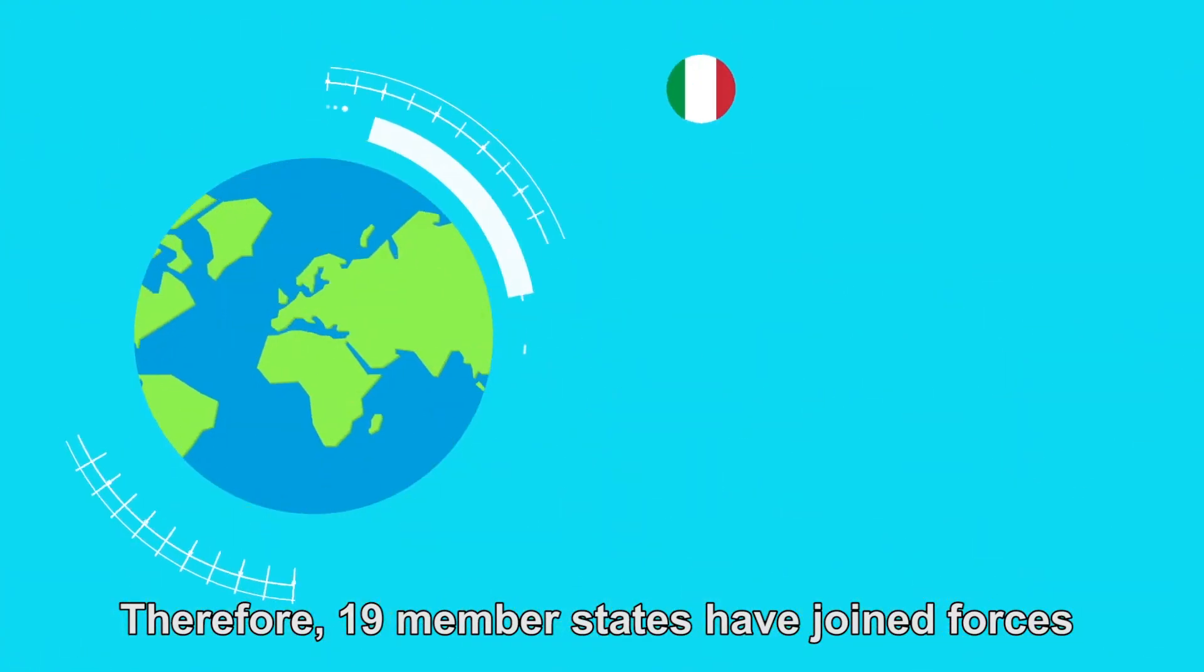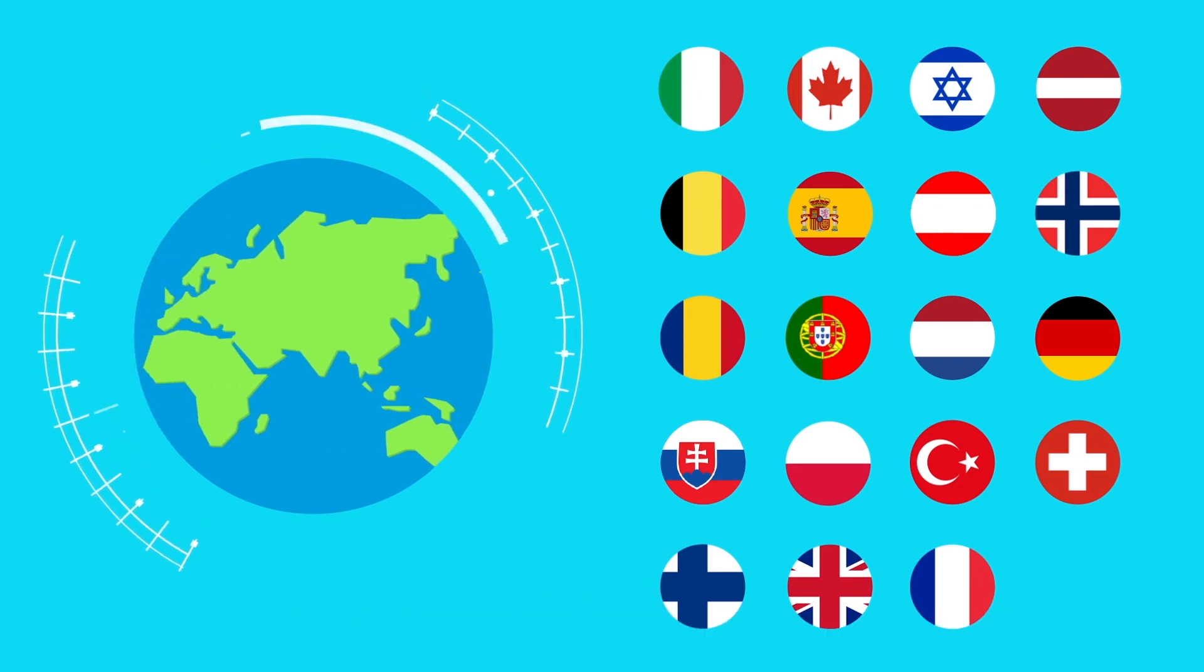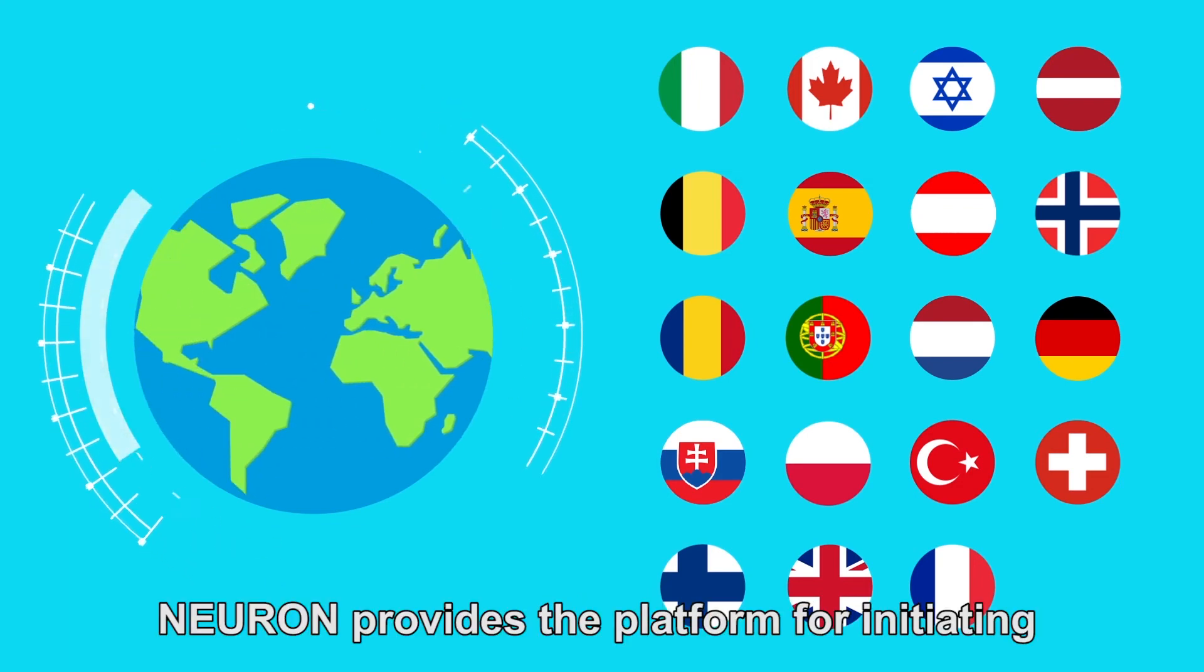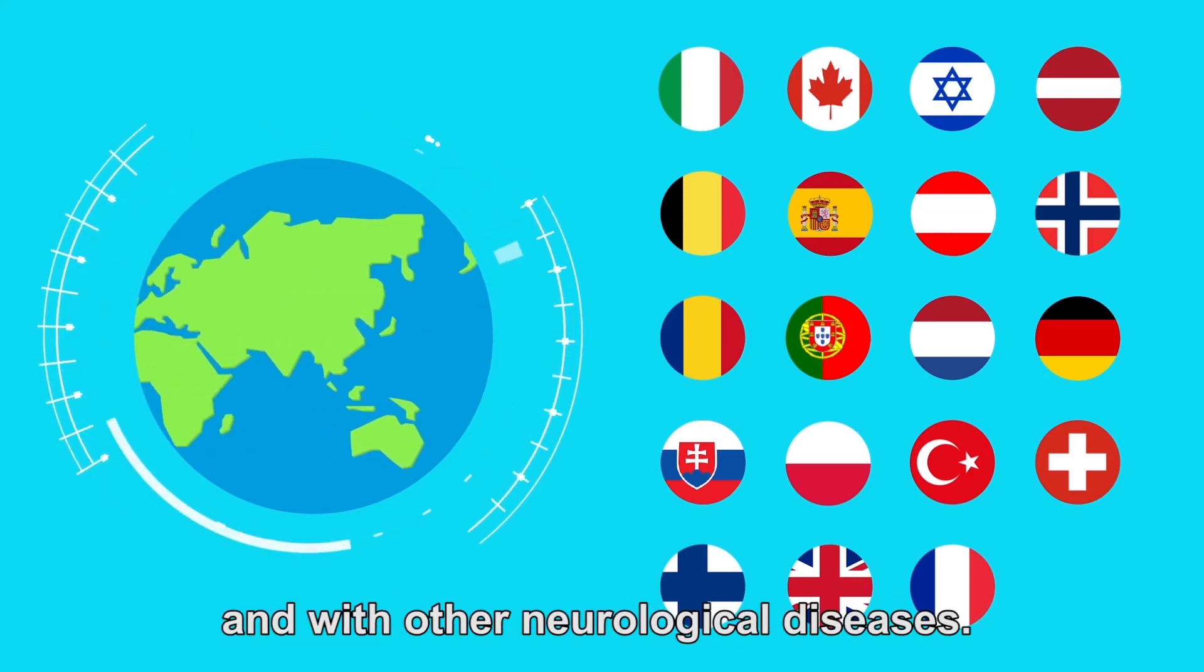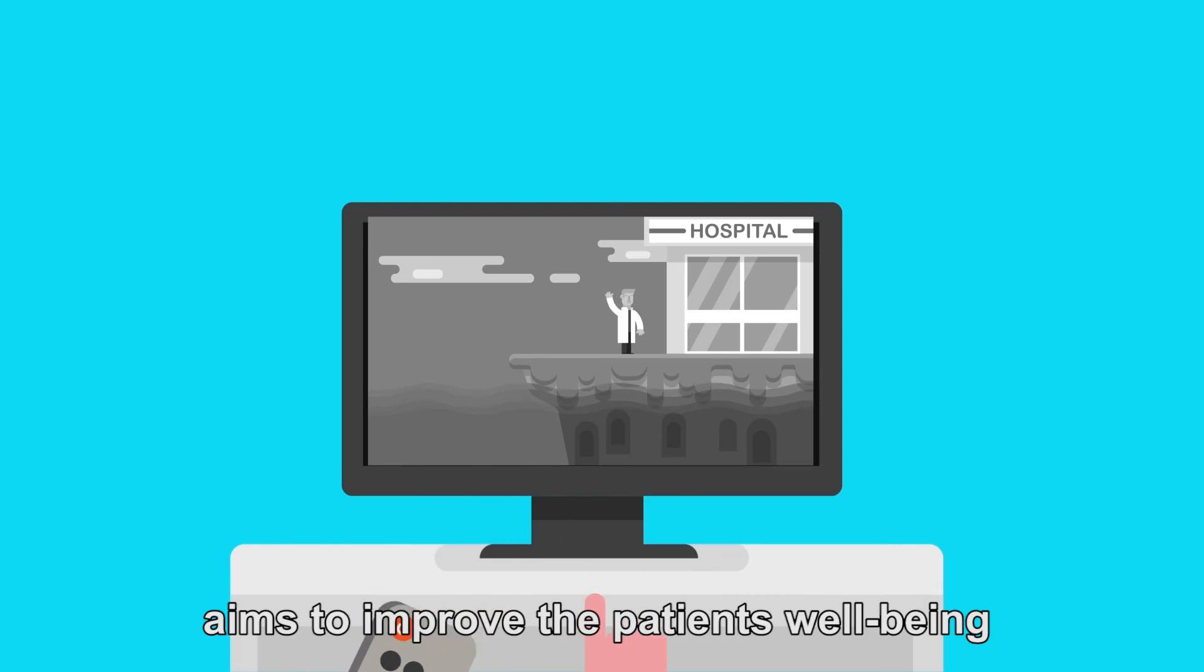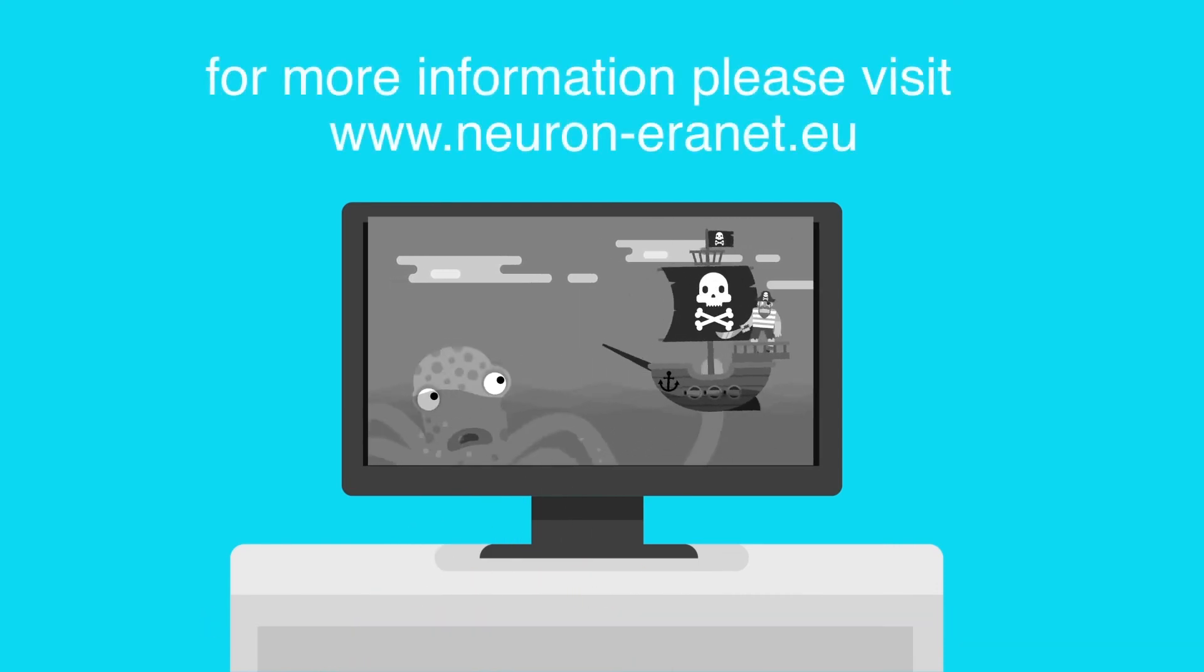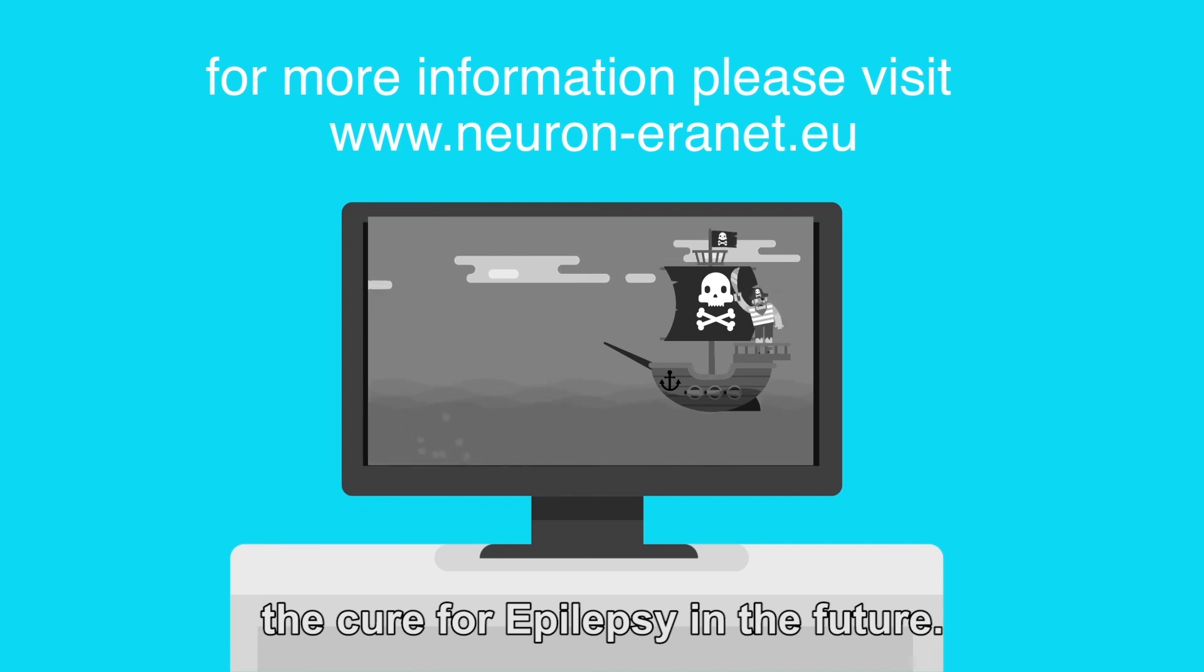Therefore, 19 member states have joined forces in Neuron, the joint program initiative on neuroscience. Neuron provides the platform for initiating and coordinating the research needed to help people with epilepsy and with other neurological diseases. Research promoted by Neuron aims to improve the patient's well-being and wishes to pave the path to ultimately finding the cure for epilepsy in the future.